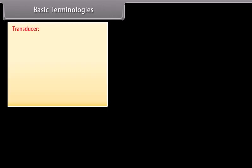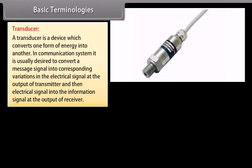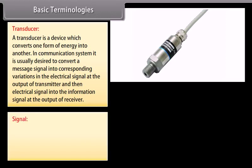A transducer is a device which converts one form of energy into another. In a communication system, it is usually desired to convert a message signal into corresponding variations in the electrical signal at the output of the transmitter, and then the electrical signal into the information signal at the output of the receiver.